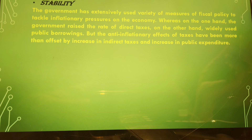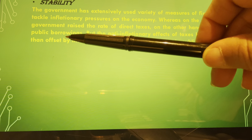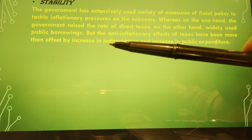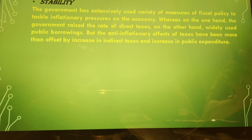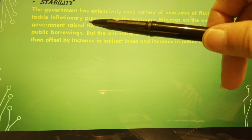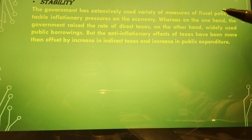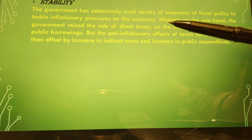The government has extensively used fiscal policy measures to tackle inflationary pressures on the economy. On one hand, the government raises the rate of direct taxes; on the other hand, it widely uses public borrowings. The anti-inflationary effects of taxes aim to offset increases in public expenditure and stabilize prices, with less money being spent on consumption.